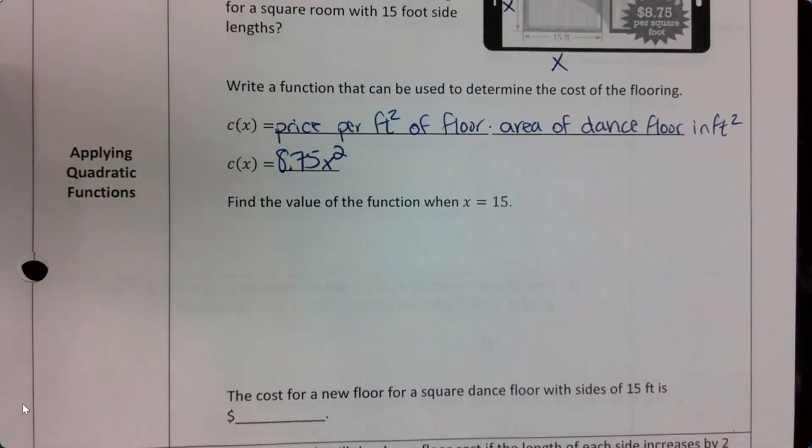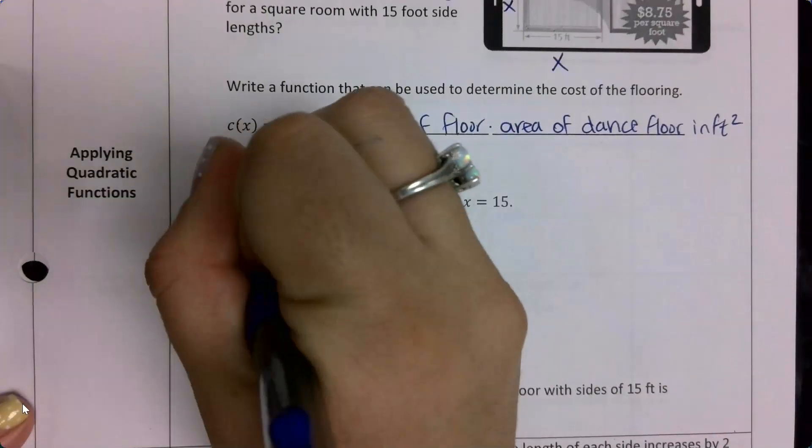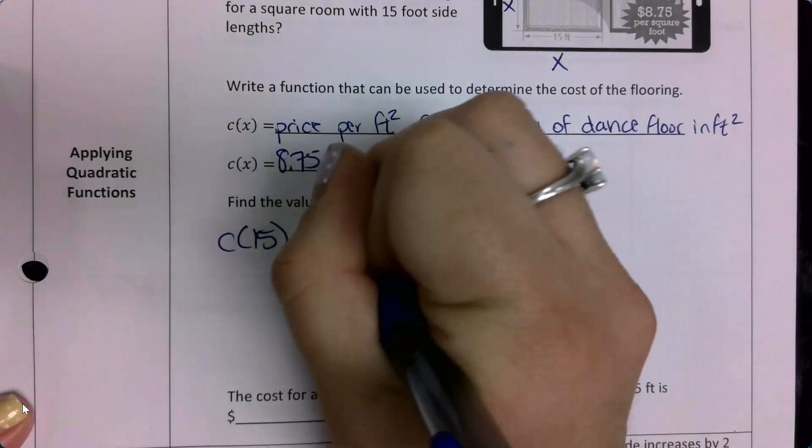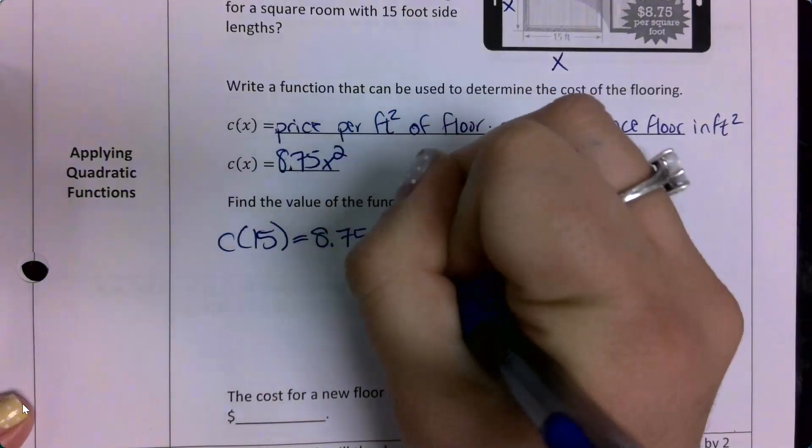Okay, so the next part wants me to find the value of the function when x equals 15. So that means I'm going to be plugging in 15 for x into this function. So c of 15 equals 8.75 times 15 squared.